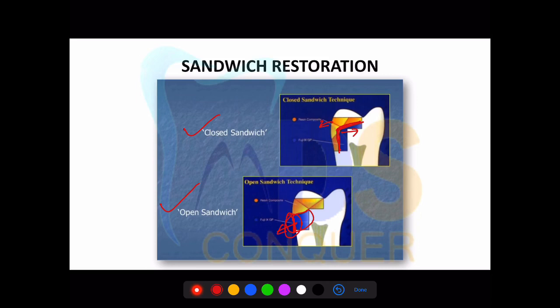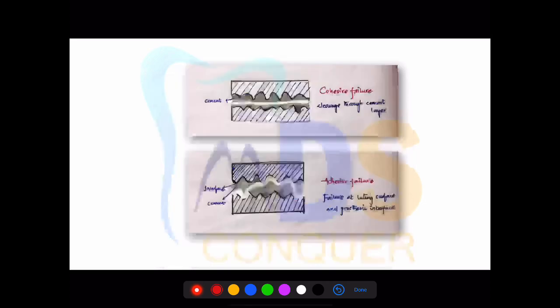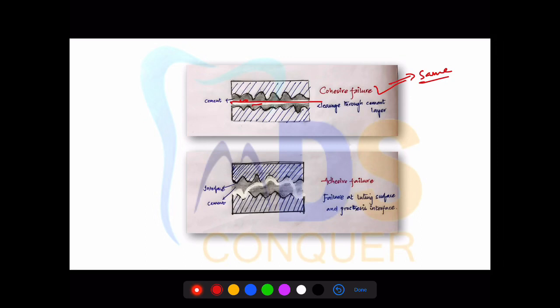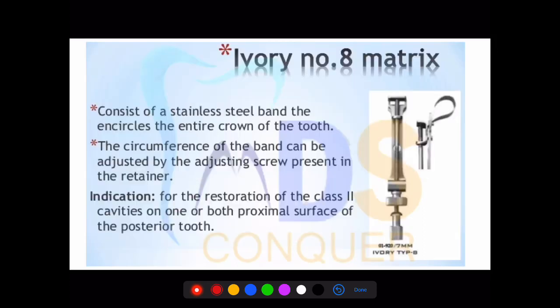Cohesive failure means the loss of bond between the same material — for example, cement to cement. Adhesive failure is failure at the interface between different objects. Cohesive failure is failure between the same objects; adhesive failure is failure between different objects.